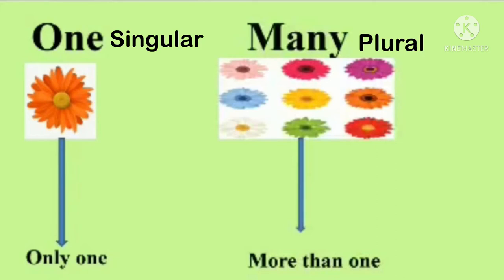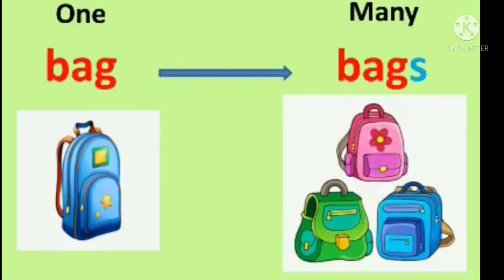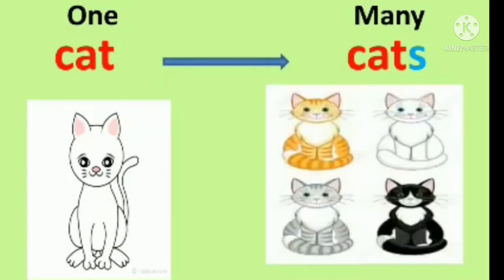Now, would you like to know how to change one to many? We add S at the end of the word. For example, one bag becomes many bags. One cat becomes many cats. Look at these pictures — we have added S after the spelling of cat.